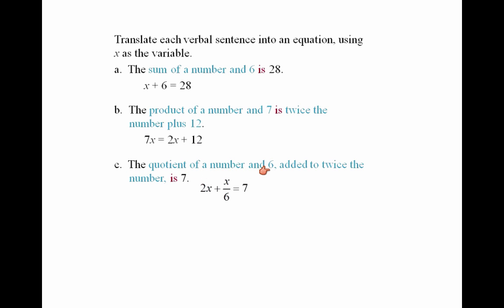The quotient of a number and 6 added to twice a number is 7. So the quotient of a number and 6 would be x over 6, added to twice a number would be 2x, equals 7. That's how you translate this into an equation.